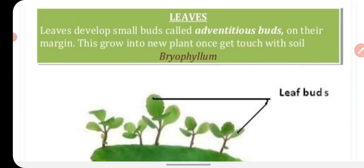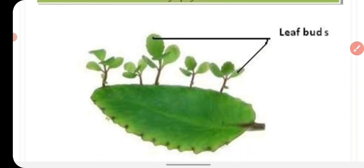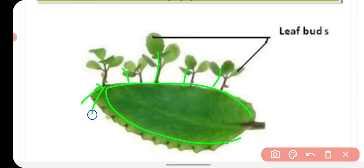Leaves can also be used for reproduction in some plants, like Bryophyllum. In Bryophyllum, small plantlets with roots develop along the margins of the leaves, which then grow into new plants.